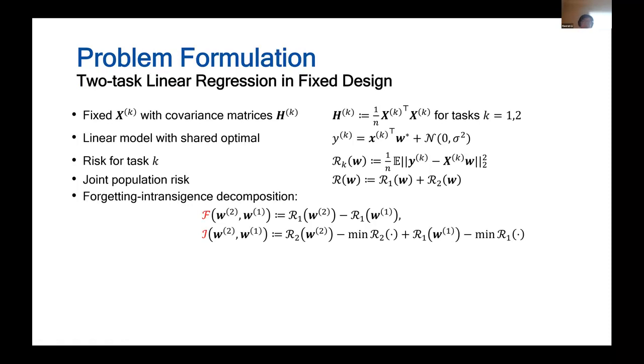which means that label vectors Y are specified by a linear model with a shared optimal w* plus noise. In this continual learning setting, we evaluate each task with its mean square loss R and also by its joint population risk for the total CL problem.